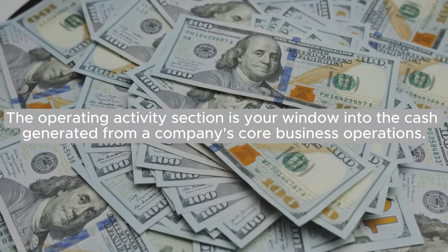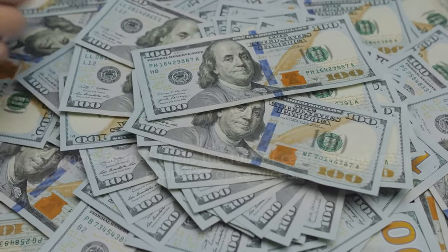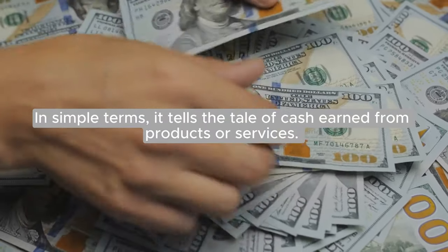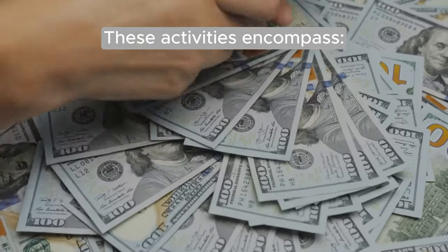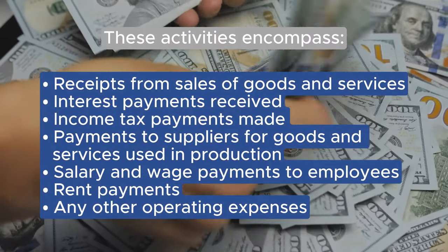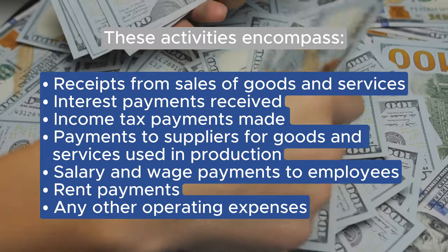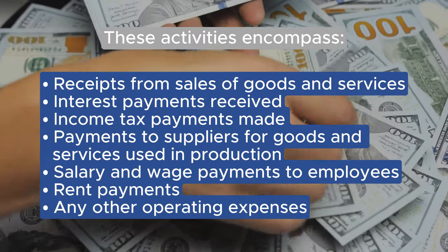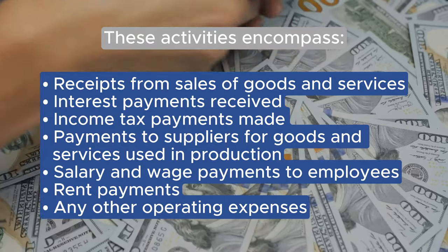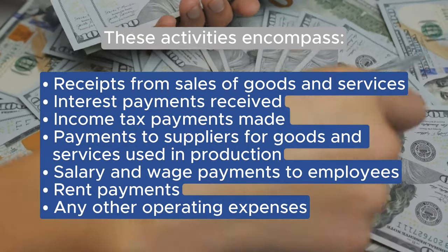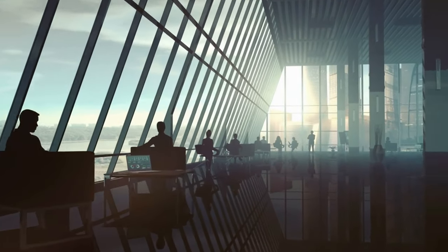The operating activity section is your window into the cash generated from a company's core business operations. In simple terms, it tells the tale of cash earned from products or services. These activities encompass receipts from sales of goods and services, interest payments received, income tax payments made, payments to suppliers for goods and services used in production, salary and wage payments to employees, rent payments, and any other operating expenses. This section unveils the financial heartbeat of a company's day-to-day operations.